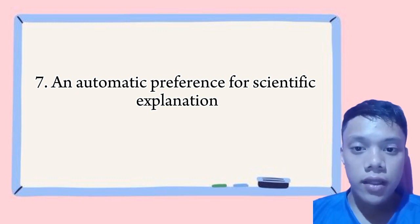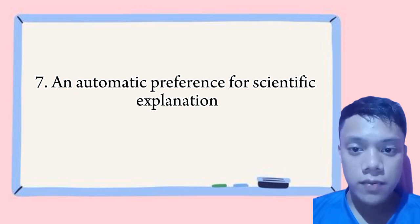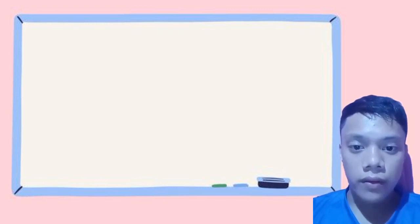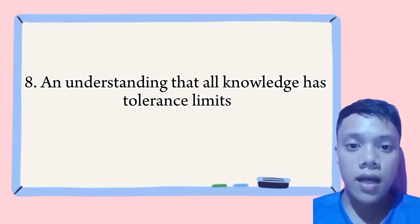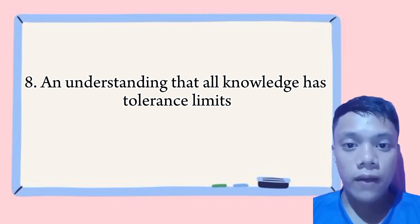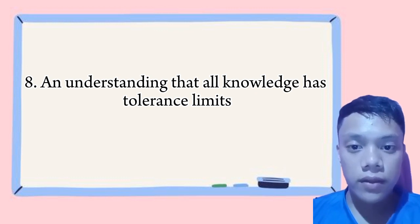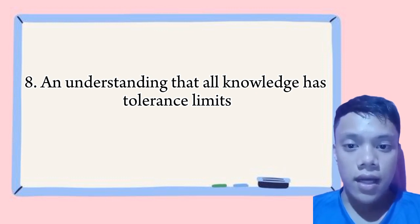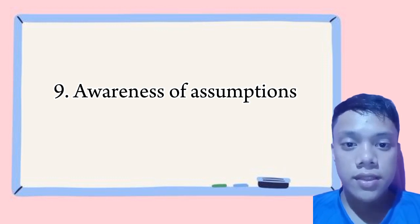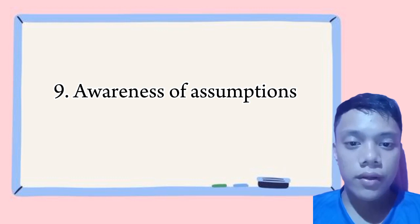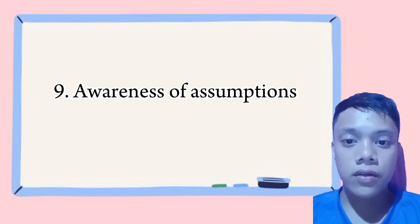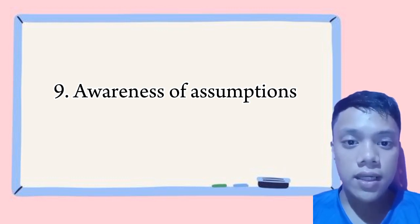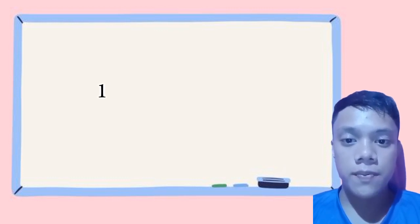Scientists prefer explanations that are based on evidence and scientific reasoning. For example, a geologist studying the formation of mountains might prefer an explanation based on plate tectonics rather than one based on folklore or mythology. Understanding that knowledge has limits — scientists understand that our knowledge is always incomplete and subject to revision. For example, a physicist studying the fundamental nature of matter might understand that current theories are not complete and may need to be revised as new evidence is discovered. Awareness of assumptions — scientists are aware of the assumptions they make and how these assumptions can affect their conclusions. For example, an economist studying the effects of a policy change might be aware of assumptions about how people respond to the change.